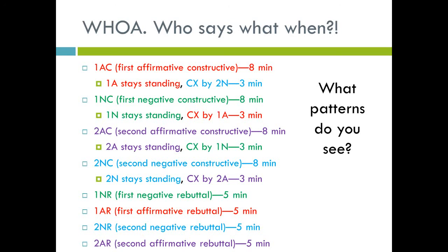Let's look at the patterns. Everyone has two speeches — so the 1A, represented in red, has the 1AC and the 1AR. The 1A gets cross-examined once right after the 1AC, and the 1A cross-exes once — they cross-ex the 1NC. Everyone gets two speeches and two cross-exes, asking and answering. The pattern goes 1, 1, 2, 2, 1, 1, 2, 2 — affirmative and negative switch speeches every time, except for the neg block, where we have two neg speeches right in a row.